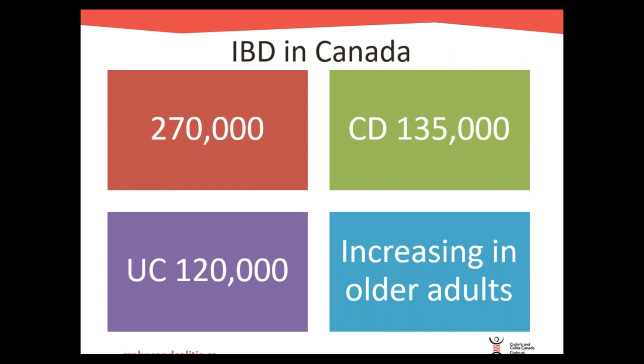Canada has one of the highest rates of IBD in the world, with over 270,000 Canadians experiencing IBD. It's estimated that by 2030 that number will increase to over 400,000 Canadians with IBD. The older adult age group is one of the fastest growing groups of individuals who have IBD, due both to new diagnoses after the age of 60 or 65, and previously diagnosed individuals moving into this older adult category.